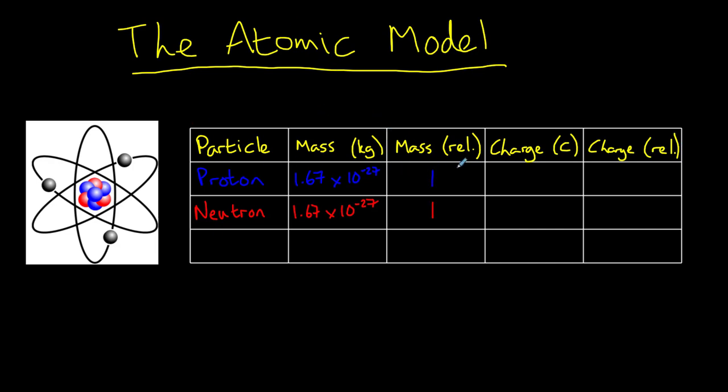Protons have a positive charge of 1.60 times 10 to the power of minus 19 coulombs, so we say that it has a relative charge of plus 1. While a neutron has a charge of 0.